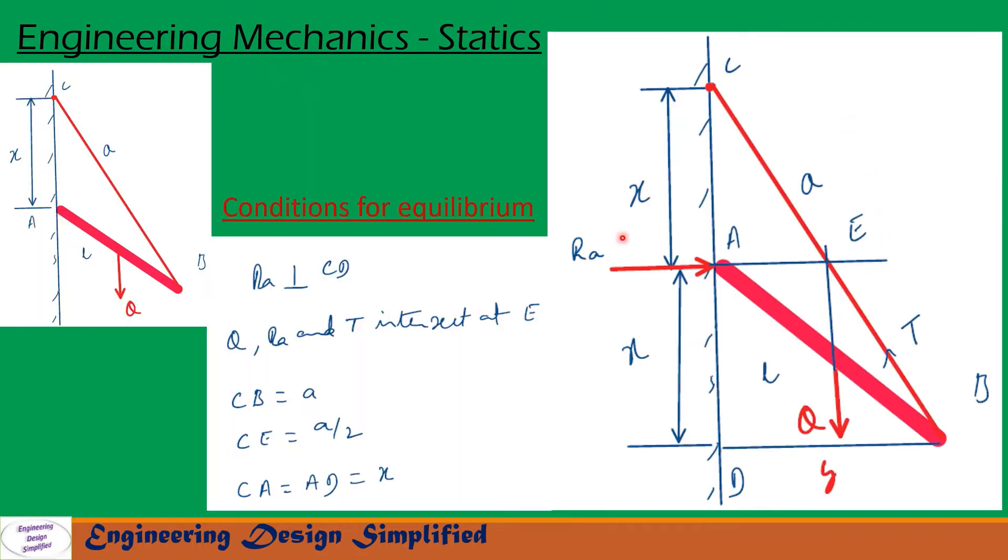The arrangement is redrawn here. Now, let us see forces and reactions. Weight of the bar Q is acting downwards vertically from the center of this bar. Tension in this string CB will be acting along this string, that is T. And since this wall is smooth wall, the reaction of the wall on this prismatic bar will be perpendicular to the wall, that is RA. For the system to be in equilibrium, all these three forces must intersect at one point.